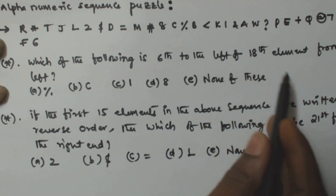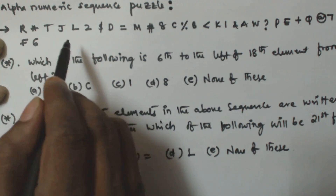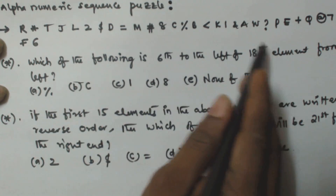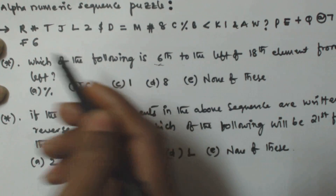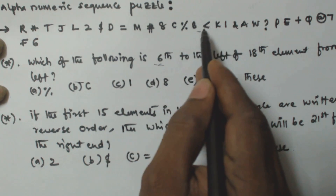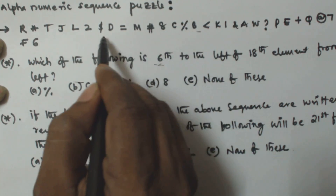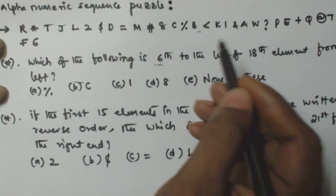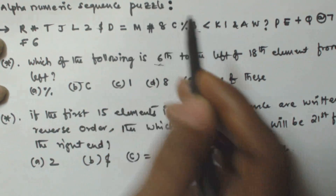For the first question, we need to find the 6th to the left of the 18th element from the left. Left is from this side and right is from this side. From the left we find the 18th letter, then move back 6 positions to the left. So the resultant character is at position 18 minus 6, which is the 12th element: 1 2 3 4 5 6 7 8 9 10 11 12.